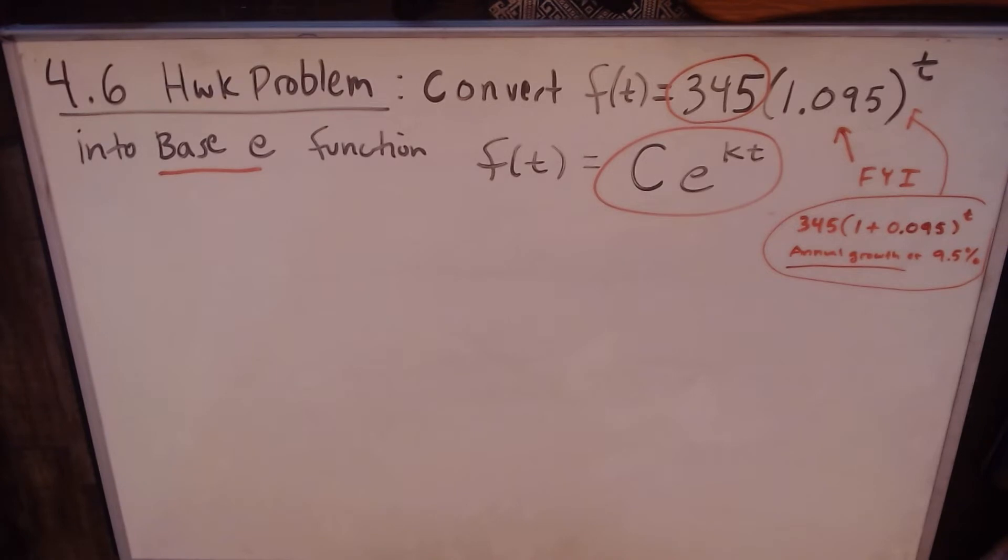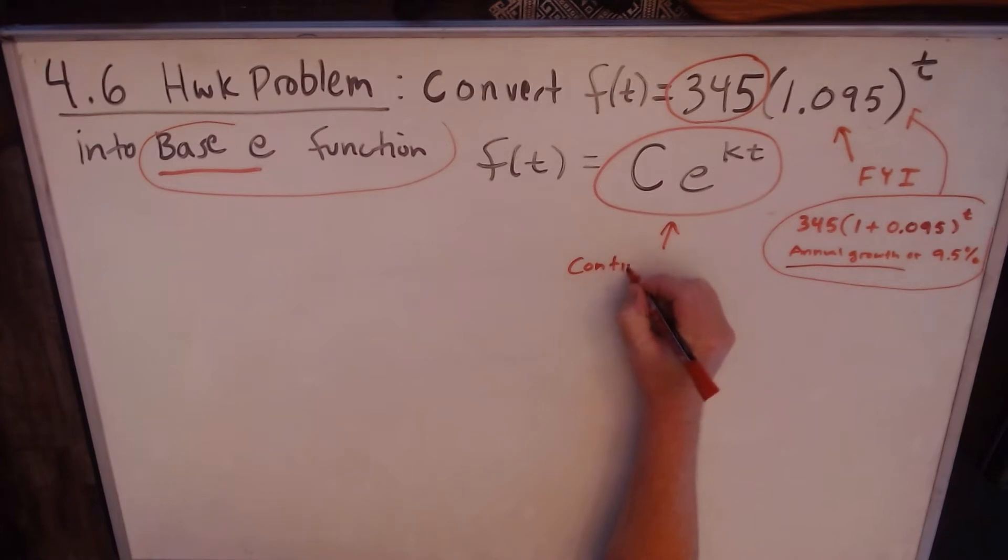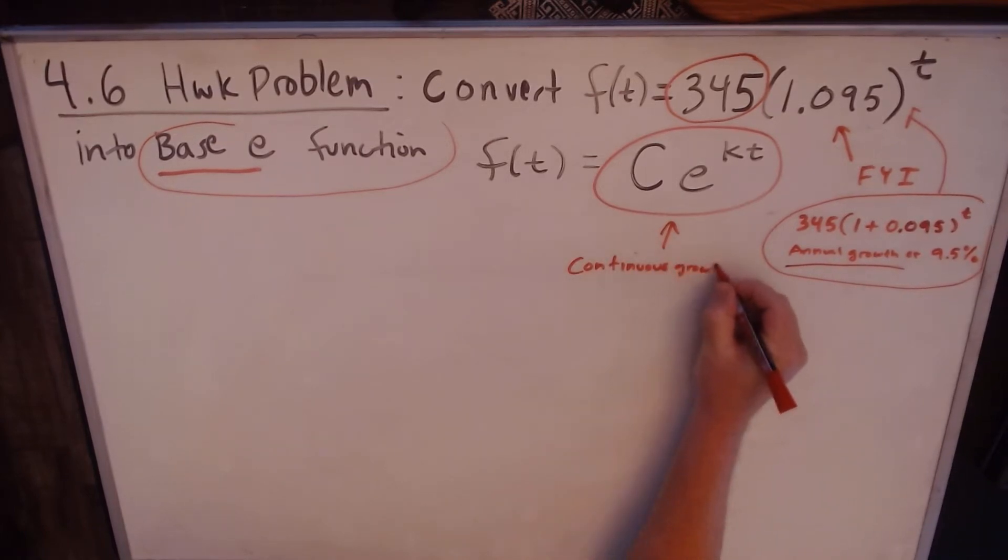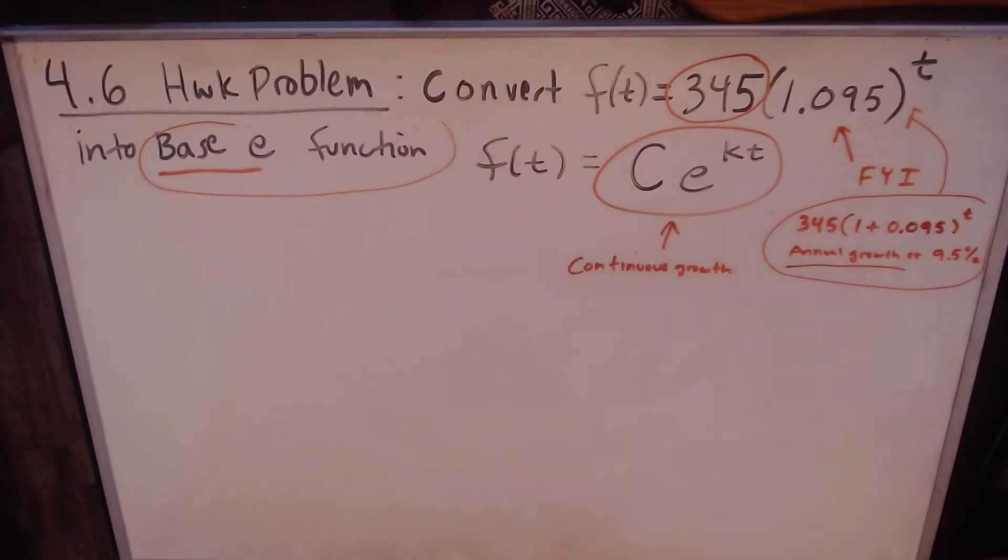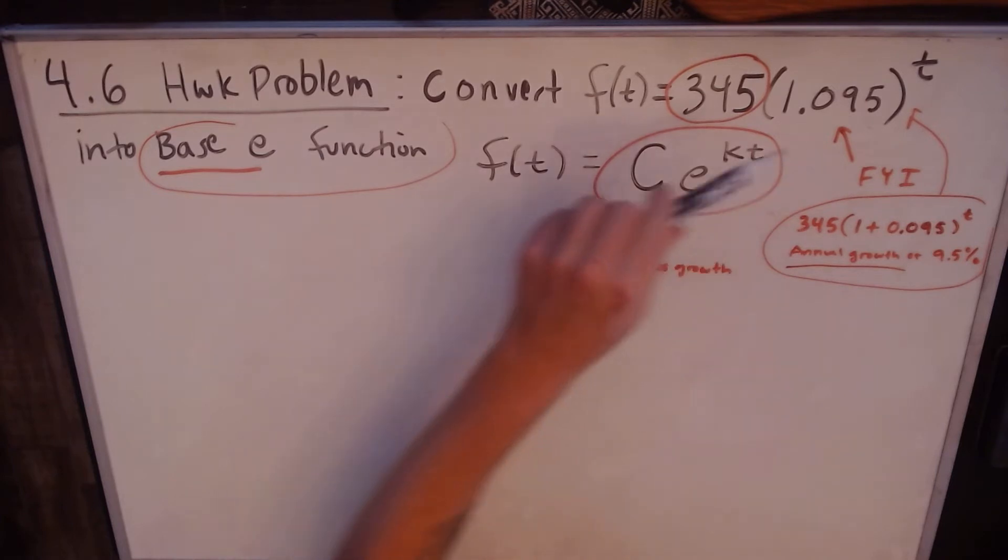It's an annual growth function. Well, we can convert it to a continuous growth function. So it's growing continuously, kind of like a population would grow. The population of people in a town doesn't wait till the end of the year to produce the new batch of people. That's just not the way it works. People are being born all the time, 24 hours a day, seven days a week.